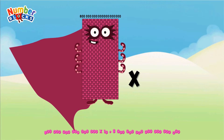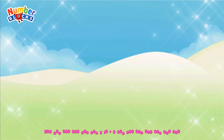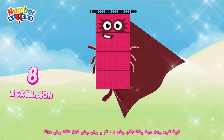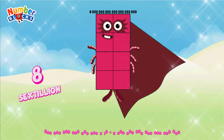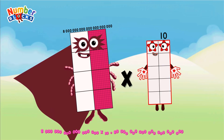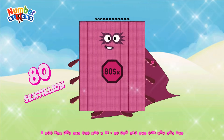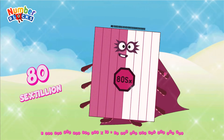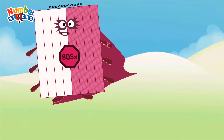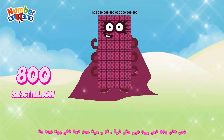800 quintillion multiplied by 10 equals 8 sextillion. 8 sextillion multiplied by 10 equals 80 sextillion. 80 sextillion multiplied by 10 equals 800 sextillion.